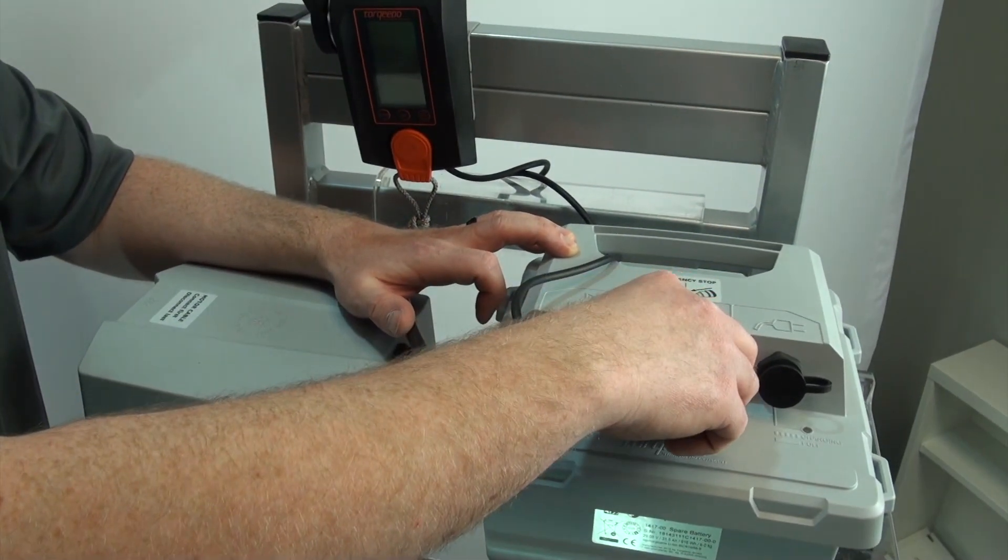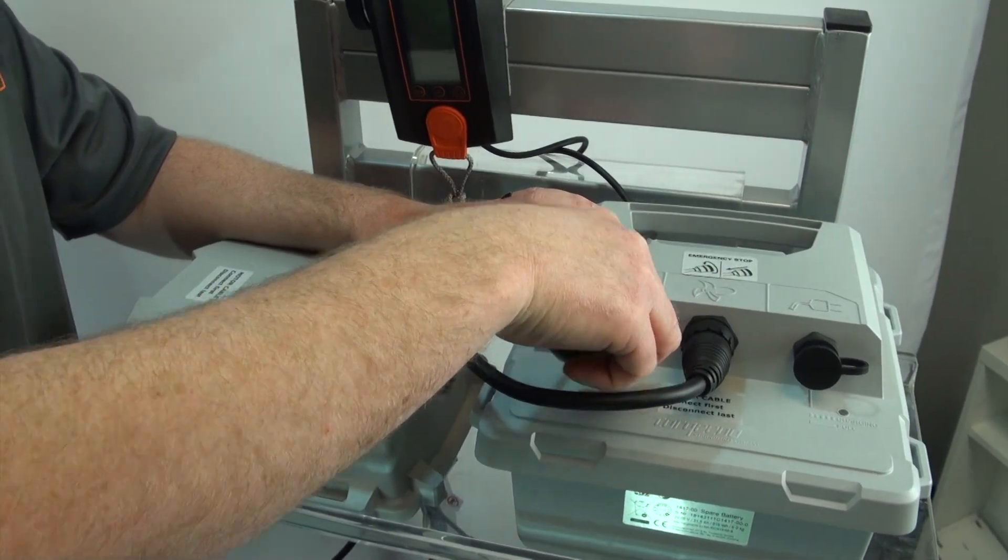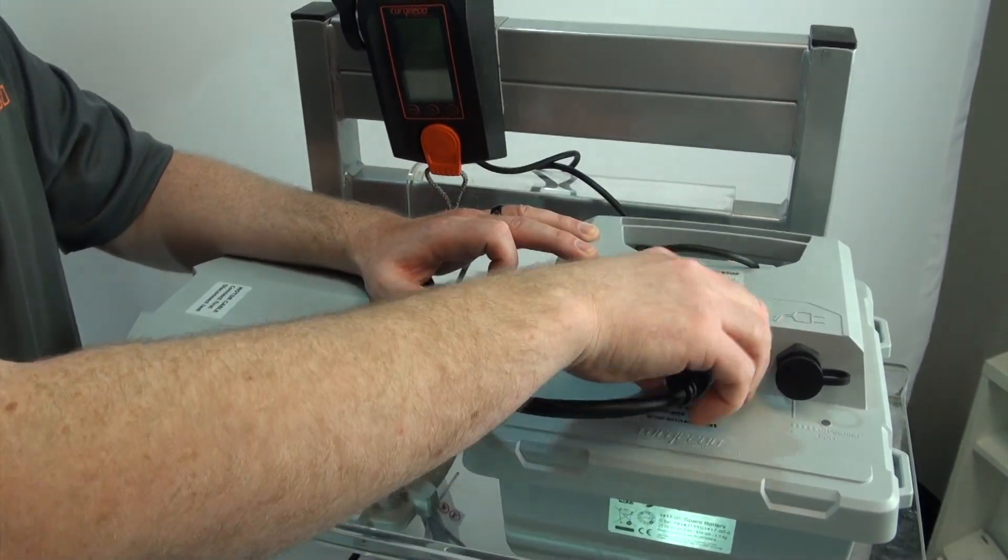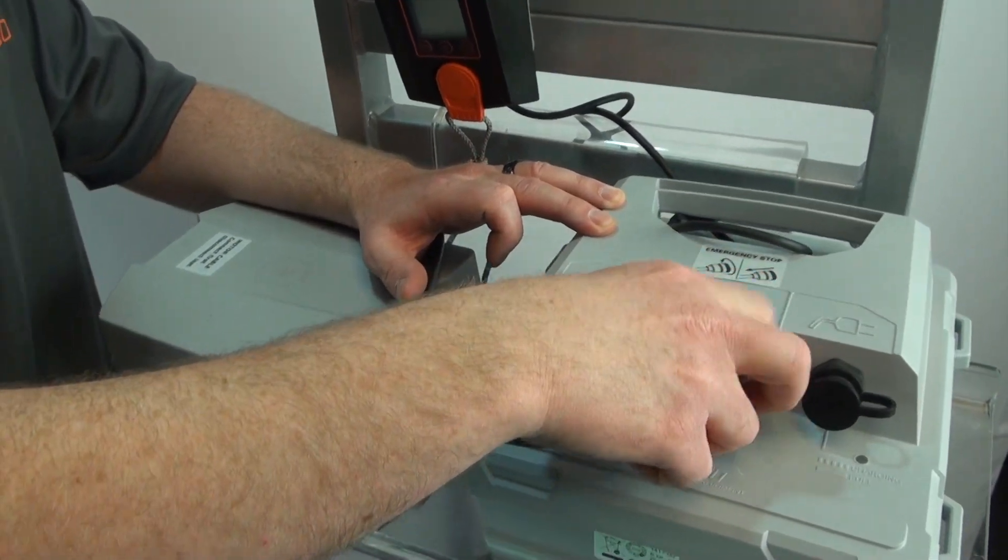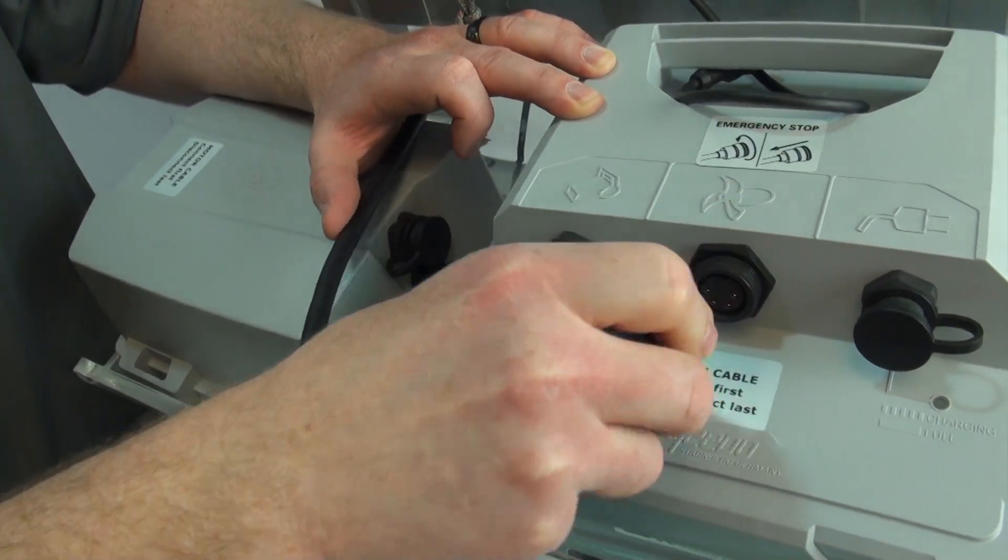First, let's address the poor contact. I'm going to go ahead and remove my remote trial cable first, set that aside, and remove the motor cable. Get that all the way off. There we go.